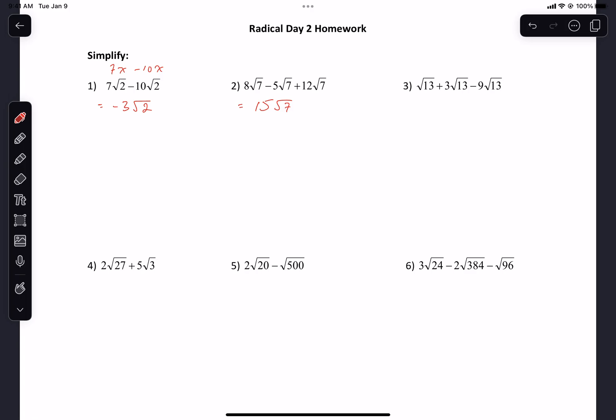If you could, then you would. Next one: 1 root 13 plus 3 root 13 minus 9 root 13. So 3 minus 9 is going to be negative 6 plus 1 should be negative 5 root 13.